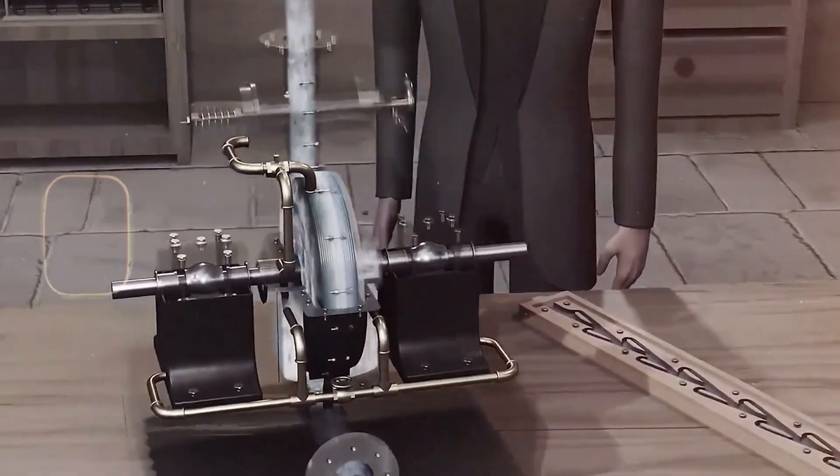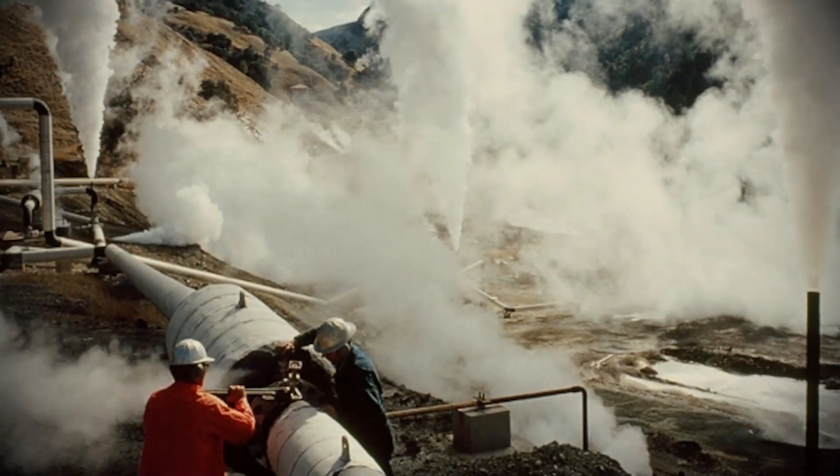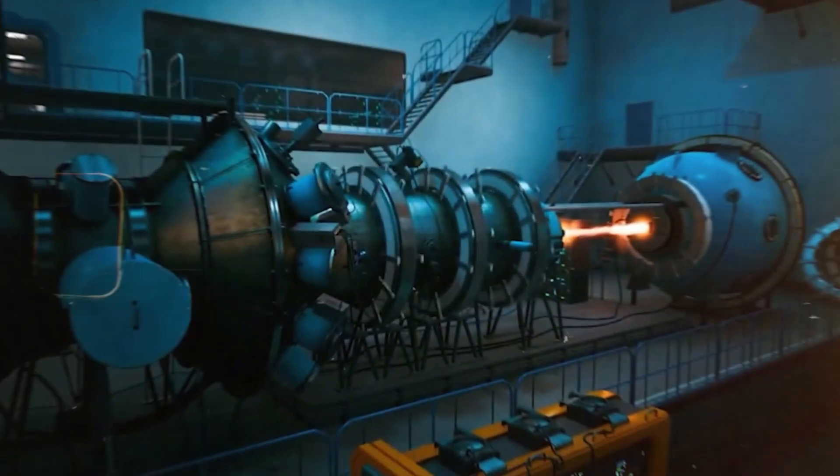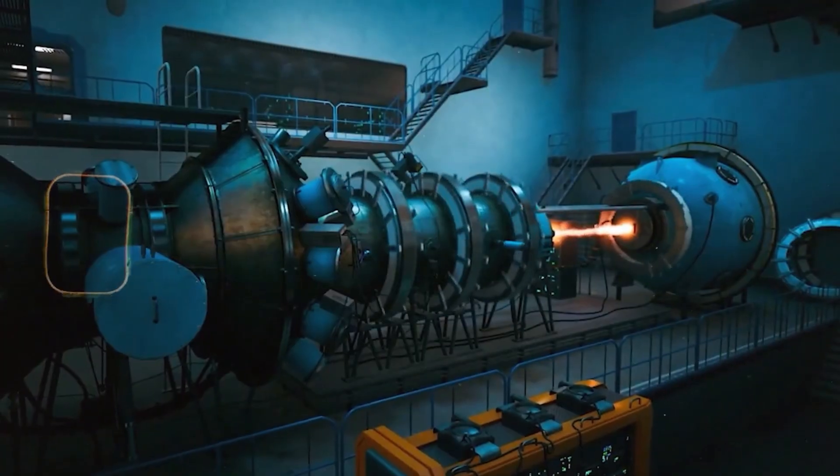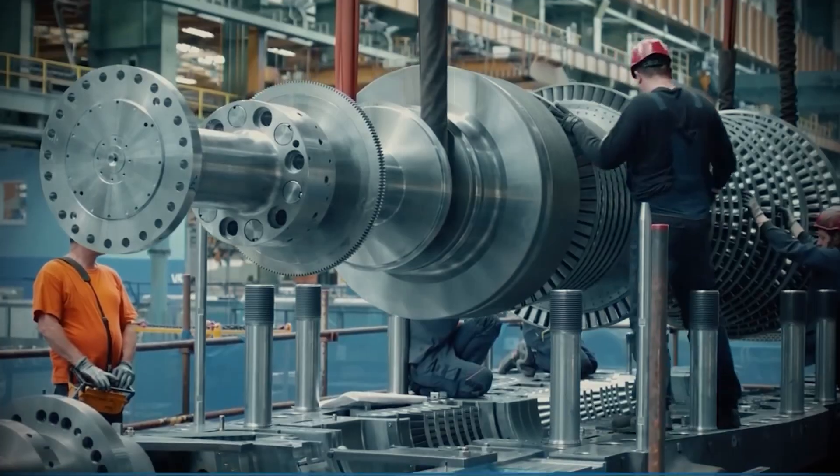The Tesla turbine, on the other hand, has no blades at all. So there's nothing for debris or minerals to damage. It can handle unfiltered geothermal steam directly from the ground, minerals, salt, rocks and all. That makes it a great option for small-scale, low-cost power systems that could run in harsh conditions without constant maintenance.